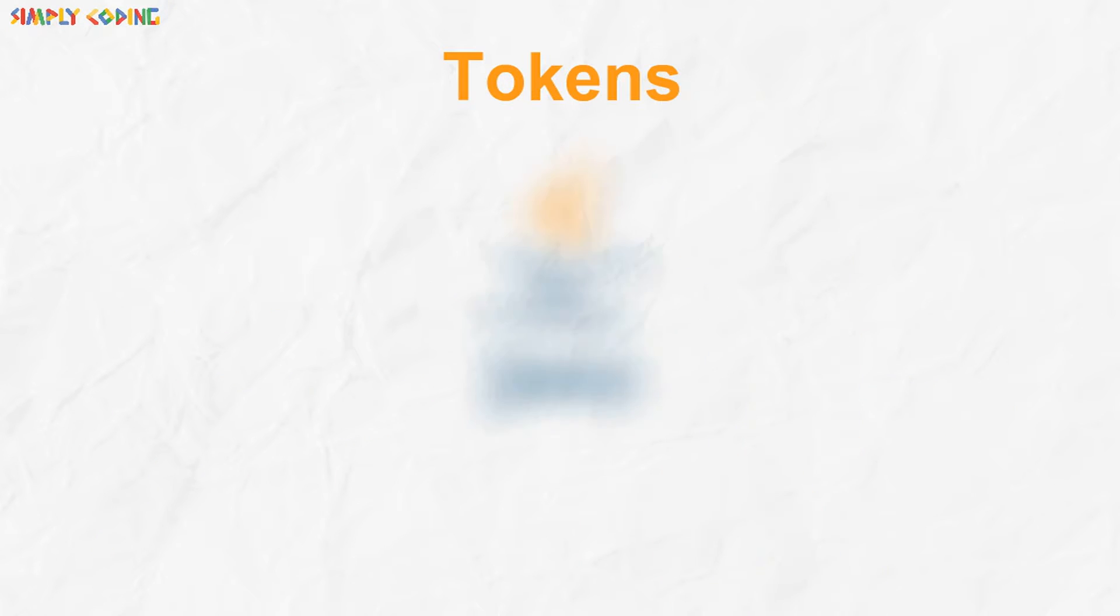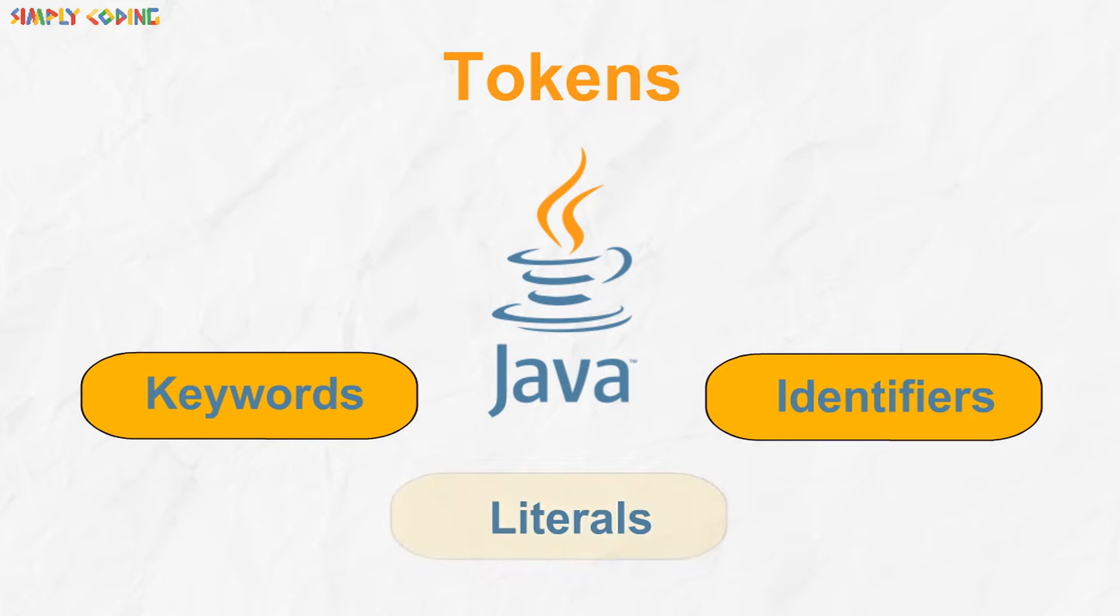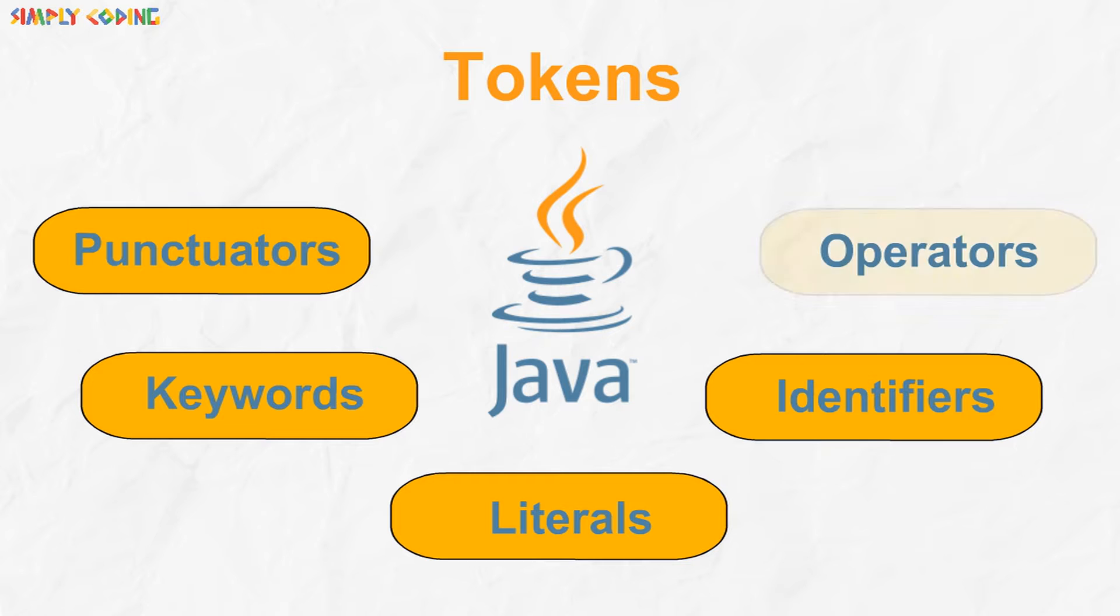Java has five different types of tokens: keywords, identifiers, literals, punctuators, and operators. Let's look at each one of them. We will start with keywords.